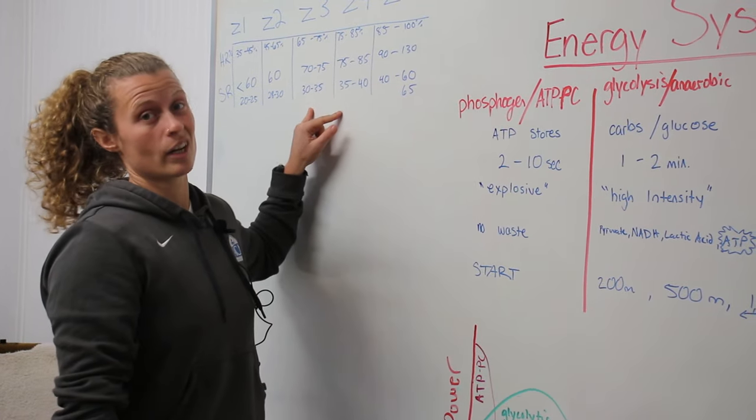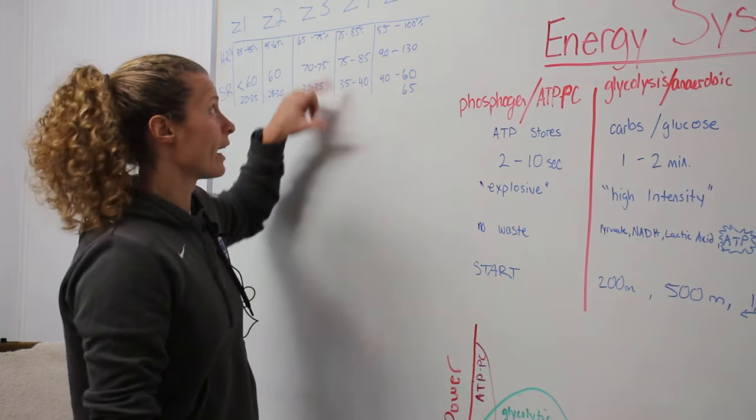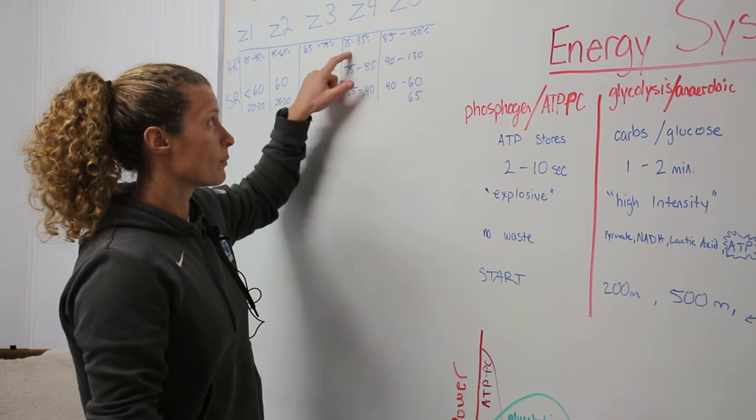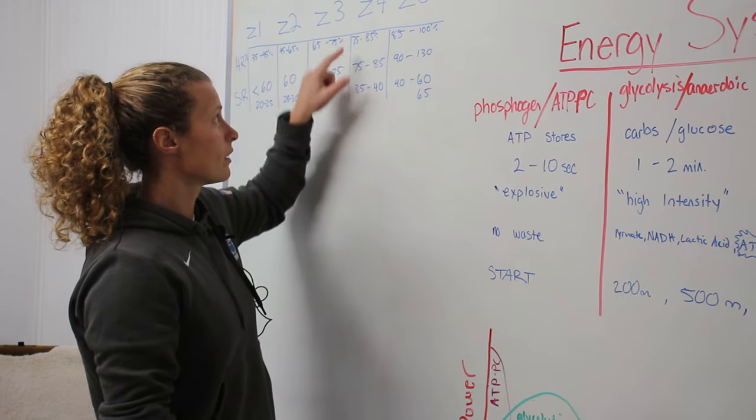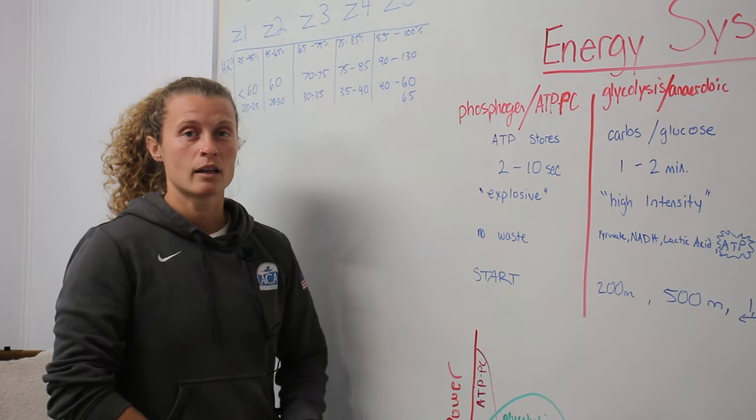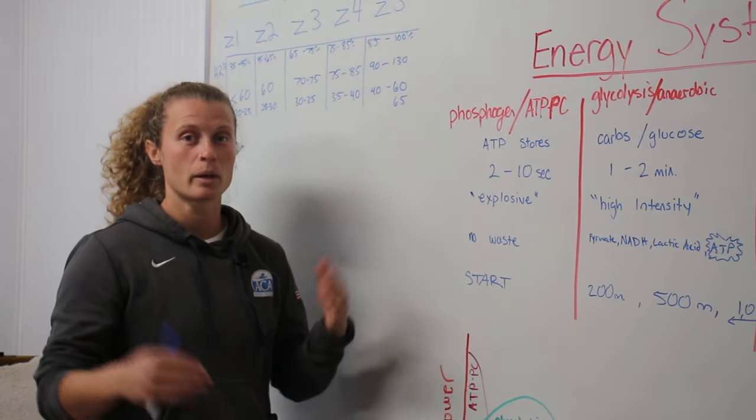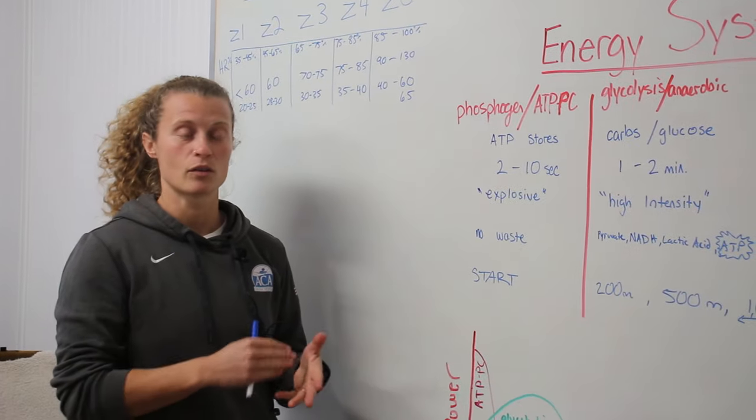So this is a huge range because your top level is going to be more than someone else's. I might be a little bit too conservative right here. Maybe you think you can hold a higher zone and still keep, or a higher stroke rate, but still keep within the zone percentage of your heart rate. It all depends on what stage you're at and your fitness level.